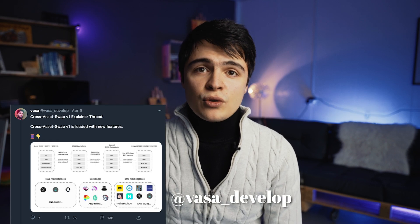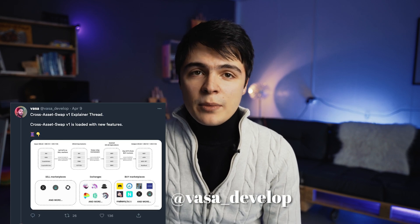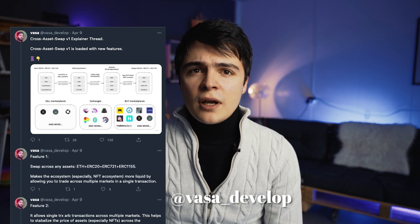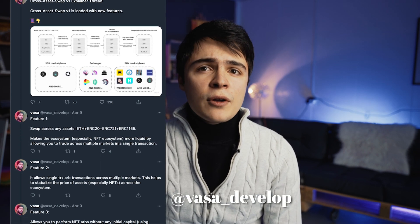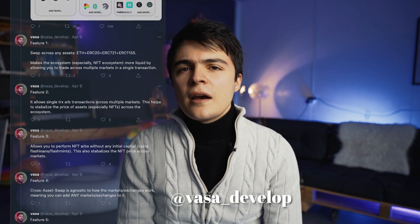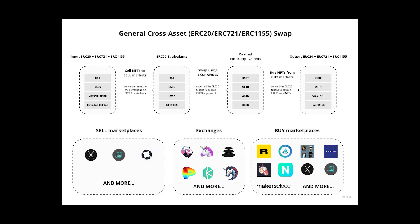Over the weekend, DeFi builder and investigator Vasa posted an explainer thread introducing CAS — that is Cross Asset Swap — a generalized one-inch protocol-like protocol allowing optimized swaps between any ERC-20, ERC-721, and ERC-1155 tokens. It's basically a set of contracts that lets you swap any input combination of assets to any output combination of assets in a single transaction in an optimized manner.